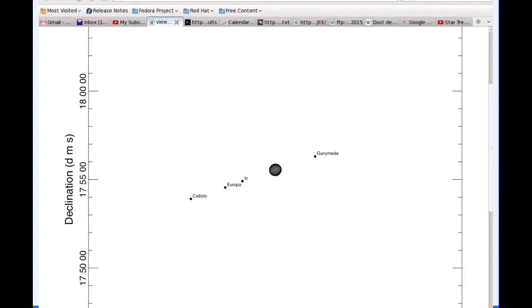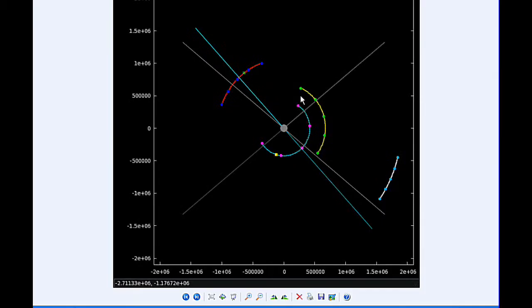By 0 hours UTC, Io is now firmly in Quadrant 2 heading west along with Europa. Ganymede is over in Quadrant 3 heading west, and Callisto continues in Quadrant 1 heading east.